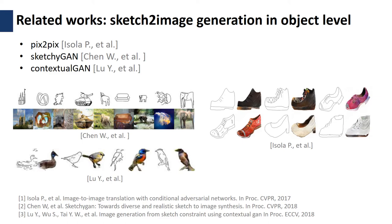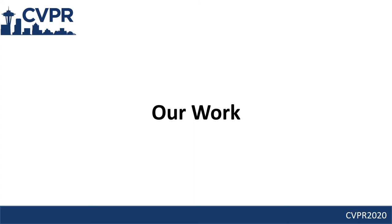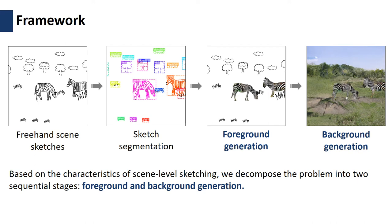In this part, I will introduce our work. In this paper, we adopt a two-stage solution for the problem of image generation from scene sketches. The first stage focuses on foreground generation, where the generated image content is supposed to exactly meet the user's specific requirement. The second stage is responsible for background generation, where the generated image content may be loosely aligned with the sketches.